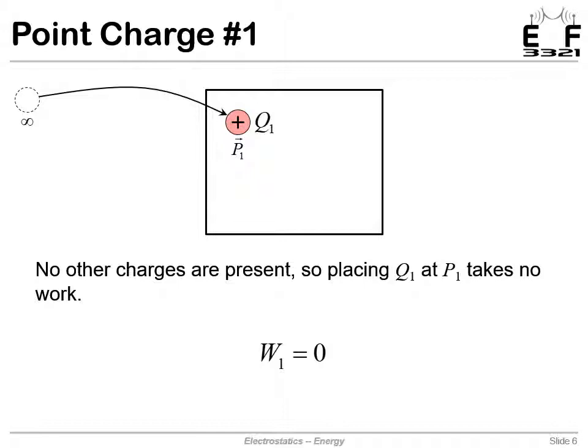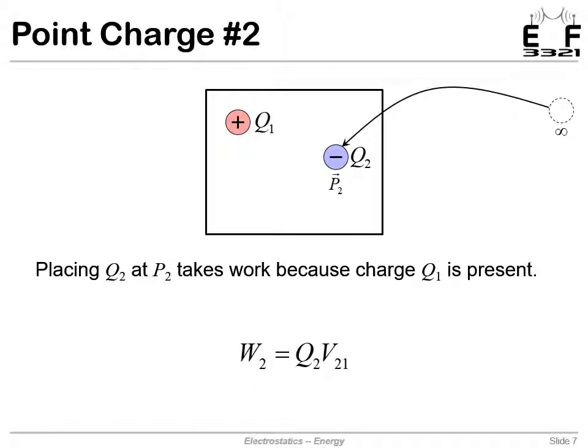Once that charge is there, it has a field. The next charge that comes in will either help or oppose that, and now we'll have a number for the work to do that. We bring in our second charge from infinity and put it at position P2 with charge Q2. However, that first charge is already in place, putting out a field that's either opposing or helping us. Either way, the work to place the second charge is not zero anymore. We can use our simple equation to calculate this: the work to place that second charge is the charge of that second particle times the potential difference between these two points.